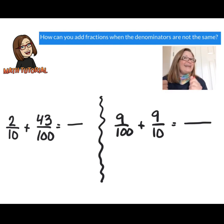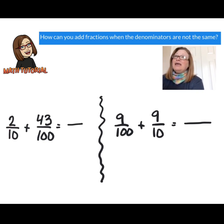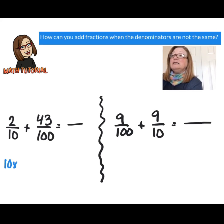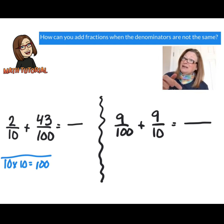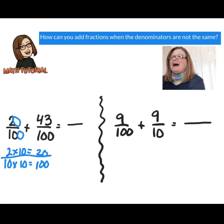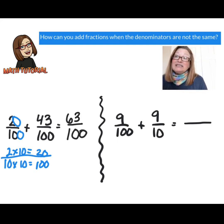Two more to go. Let's look at two tenths and add it to 43 one hundredths. We cannot add unlike denominators — the denominators have to be the same and stay the same through addition. So let's find an equivalent fraction for two tenths. I know 10 is a multiple of 100, so 10 times 10 gives me 100. What I do to the denominator I do to the numerator: two times 10 gives me 20. So two tenths is the same as 20 hundredths. Now I add 20 plus 43, which equals 63, and the denominator stays the same — 63 one hundredths.